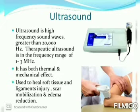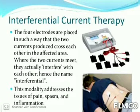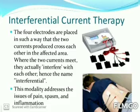Another modality used for pain is interferential current therapy, in which there are two currents that meet and interfere with each other. This modality is mainly used for pain reduction, muscle spasm, and inflammation.